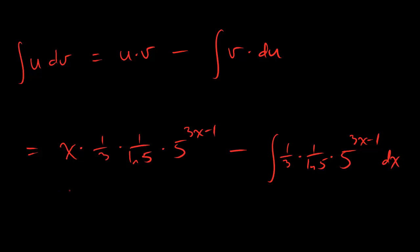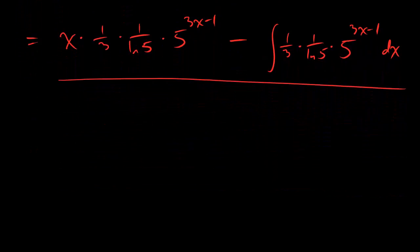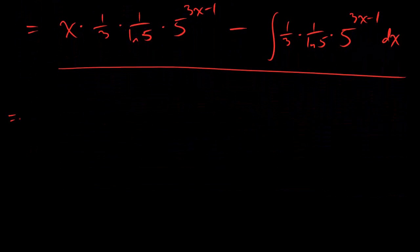All right, so this is what we're trying to simplify, and let's get cracking by mostly giving ourselves more space and pulling the constants out front. So let's make it 1 over 3, 1 over ln 5, x, 5 to the 3x minus 1, that's what we have on the left hand side,